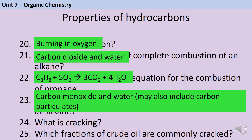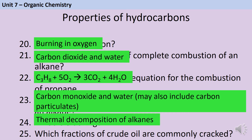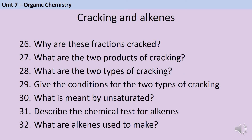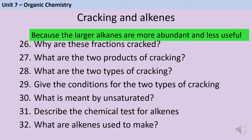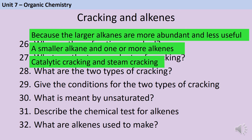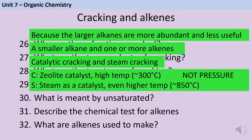Cracking is the name we give to the thermal decomposition of alkanes. It's commonly the largest fractions of crude oil that are cracked, because we have a much higher supply than demand and they don't make good fuels. The two products of cracking are a smaller alkane and one or more alkenes. The two types are steam cracking and catalytic cracking. Catalytic cracking uses a zeolite catalyst at around 300°C. Don't mention pressure — there is no credit at GCSE for pressure in cracking. Steam cracking uses steam and a much higher temperature of up to about 850°C.